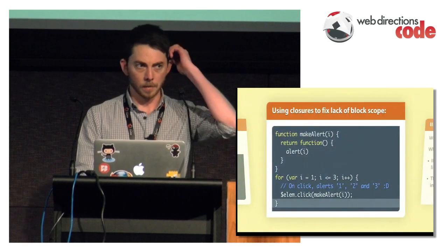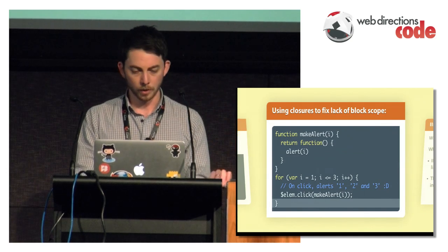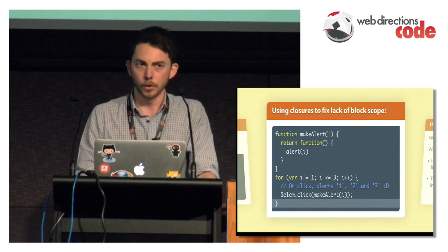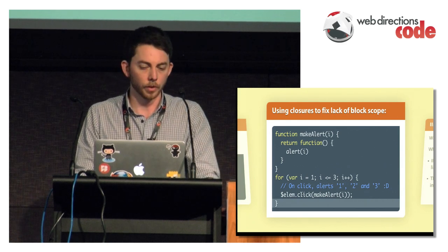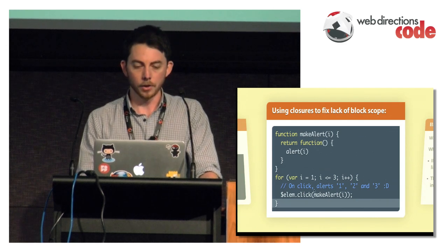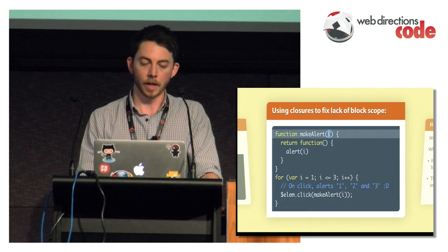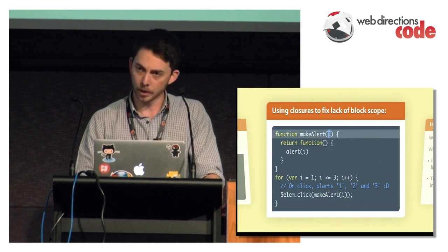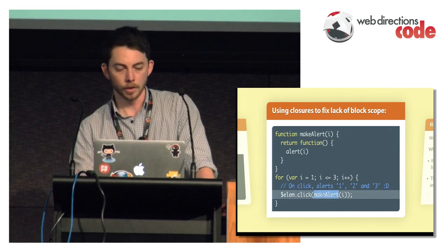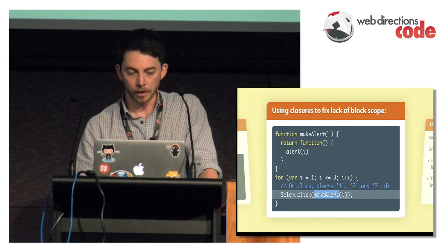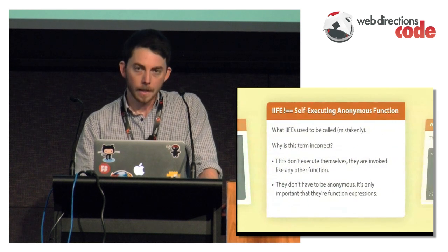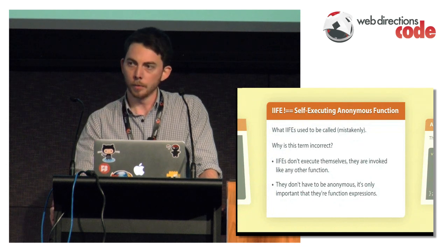Closures are useful to fix the lack of block scope for event handlers, like we saw earlier. The best approach — better than putting an IIFE in the middle of your for loop — is to have a function that creates the function and you pass it the value of i. That'll seal in the value at the point when this makeAlert function is run. So now this works correctly, it's a lot easier to read, and you get to use closures, which is pretty cool.